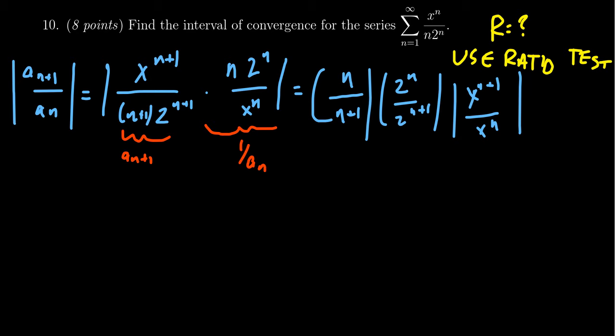Let's simplify. When you take 2 to the n plus 1, this factors as 2 to the n times 2 to the first by exponent rules. The 2 to the n's cancel, leaving just a 2 in the denominator. The same happens with x to the n, leaving just x to the first. This simplifies to the absolute value of x over 2 times n over n plus 1.